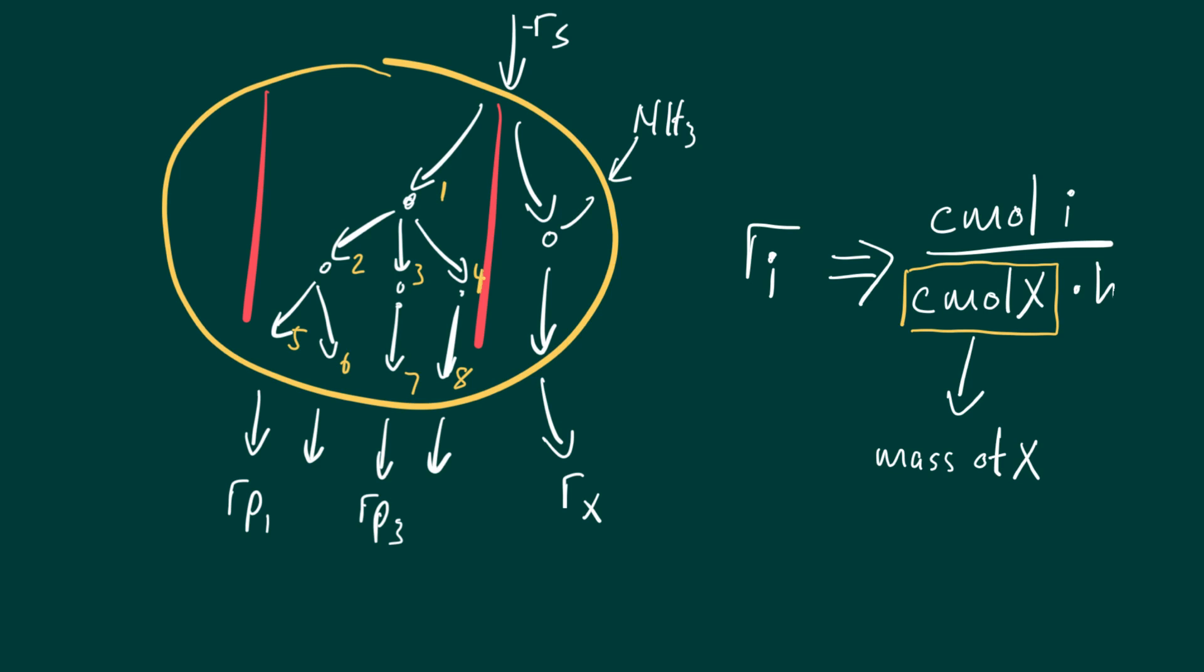Or even if we're working with internal rates, it will be numbered by one to whatever number we end up with, will be C moles of that specific component per the basis C mole X, and per hour. We always use an hour because these bugs don't react that fast. Minutes or seconds will be too short.